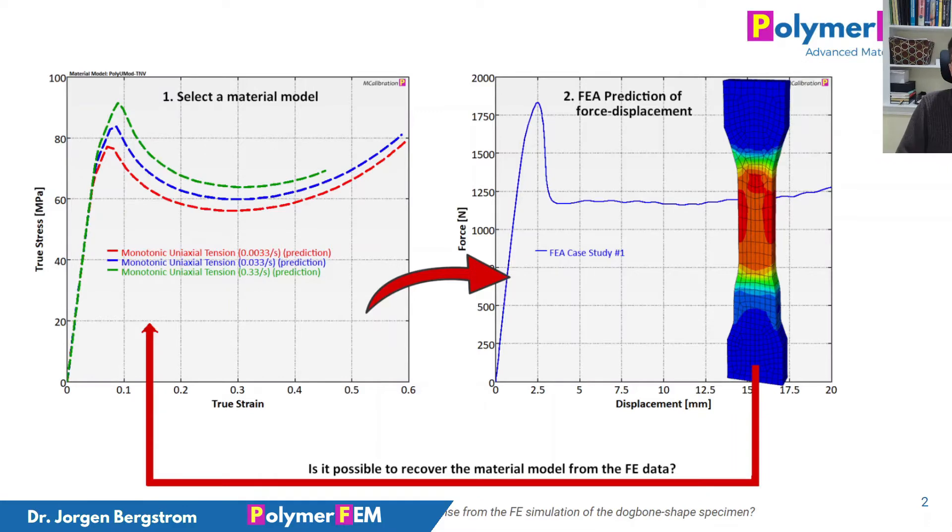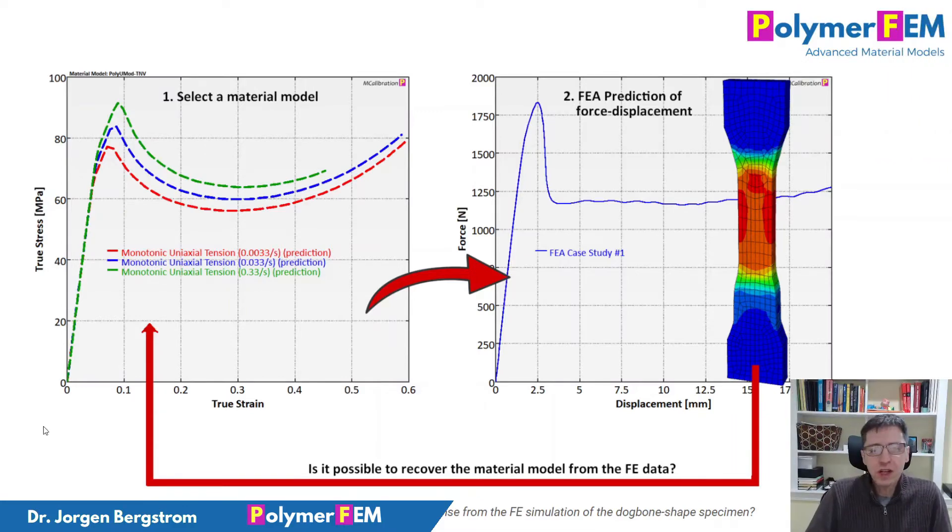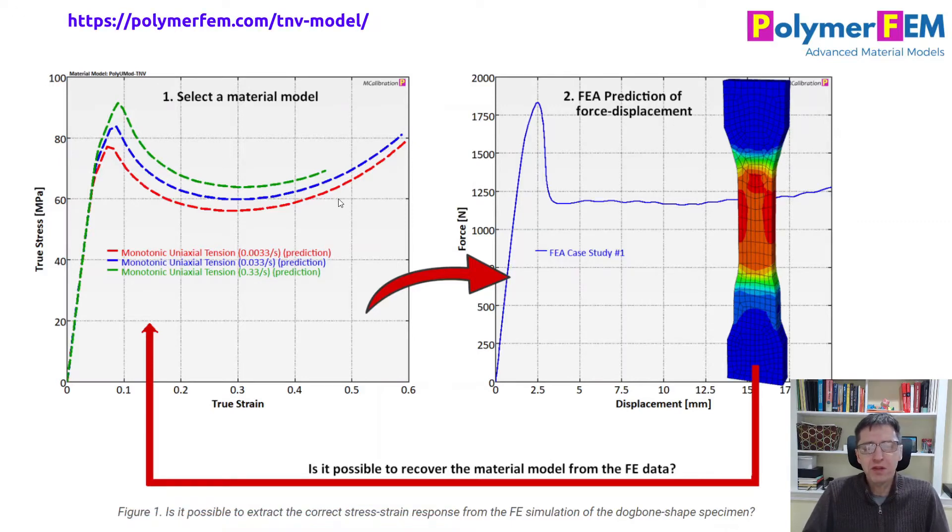To do this, I came up with an interesting strategy. I start with the material model that I have defined. In this case, I'm using the Polyumod TNV model. It's a viscoplastic material model that can have a softening after yielding.